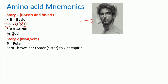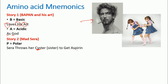The next story is about a mad girl named Sarah who always fights with her sister. You need to remember: 'Sarah throws her sister to get aspirin.' Capital S-E is Serine, T-H is Threonine, capital C is Cysteine — written as 'sister' because it's homophonic with cysteine — capital G is Glycine, and A-S-P is Asparagine. All these amino acids are polar in nature, meaning they can produce a soluble part of a protein.